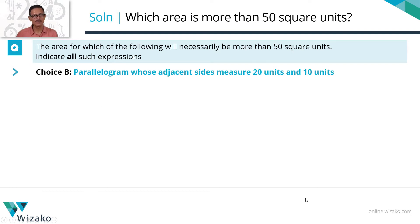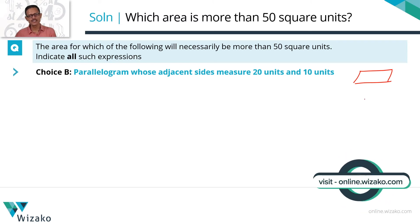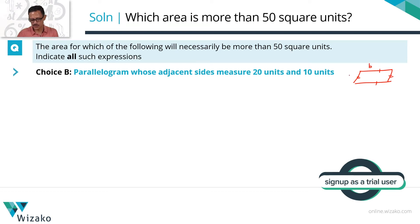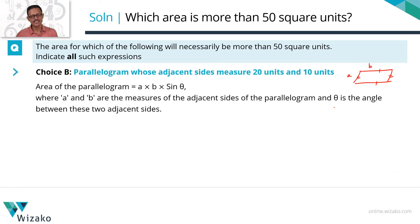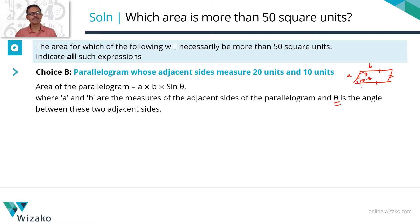The second one is a parallelogram whose adjacent sides measure 20 units and 10 units. A parallelogram is a quadrilateral where opposite sides are parallel and equal. Let's say one side measures b units and the adjacent side measures a units. The area of a parallelogram is given by ab·sinθ, where θ is the angle between the two adjacent sides. Adjacent angles in a parallelogram are supplementary — if one is θ, the other is 180 minus θ.